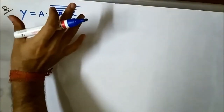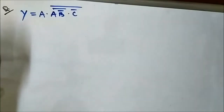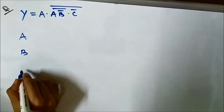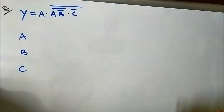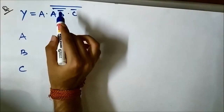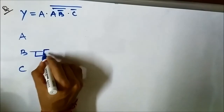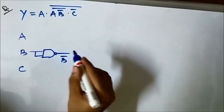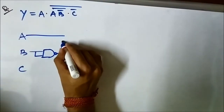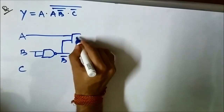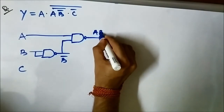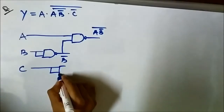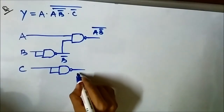Now we have to implement this modified Boolean expression in AND form using NAND gates. First, let us represent the individual signals A, B, and C — three signal variables are present. First we need B bar, so we pass B through a NAND gate to get B bar. Then for AB complement whole complement, we pass signals A and B complement through another NAND gate, which gives us AB complement whole complement. Now we require C complement, so we pass the C signal through a NAND gate to get C complement.